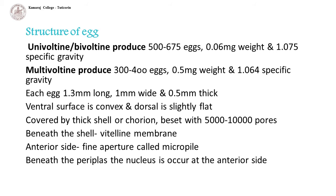The ventral surface of the egg is convex and the dorsal side is slightly flat. It is externally covered by a thick shell or chorion that is beset with 5000 to 10000 pores. Beneath the shell there is a fine vitelline membrane. At the anterior side of the egg there is a fine aperture called micropyle. The nucleus occurs at the anterior side, beneath which occurs the yolk, entered by a fine film of cytoplasm called periplasm.